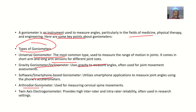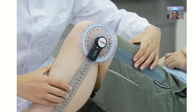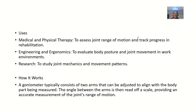Then we have the arthrodial goniometer, which is used for measuring cervical spine movements. The twin-axis electro-goniometer provides high intra-rater and inter-rater reliability and is often used in research settings.